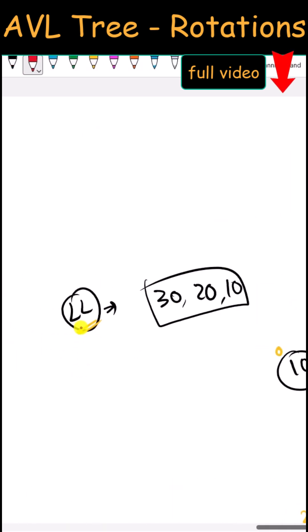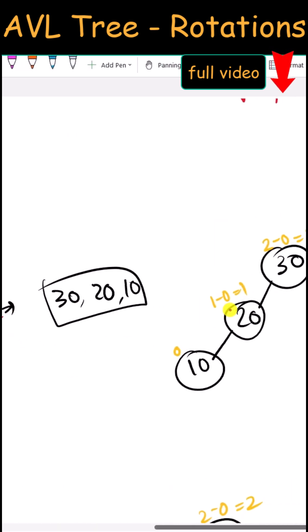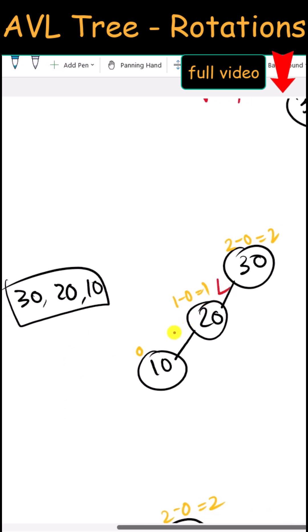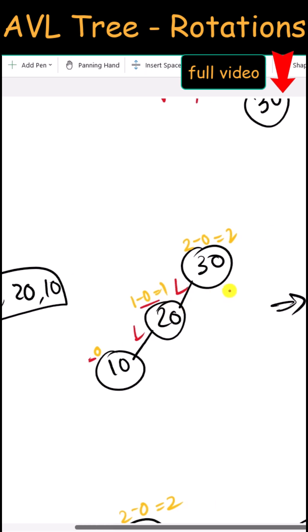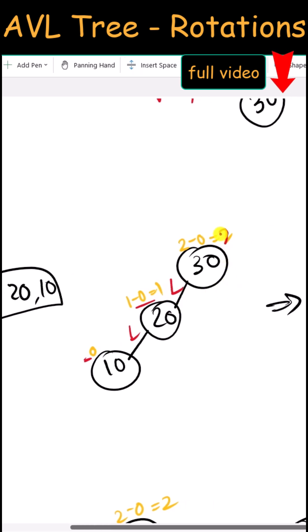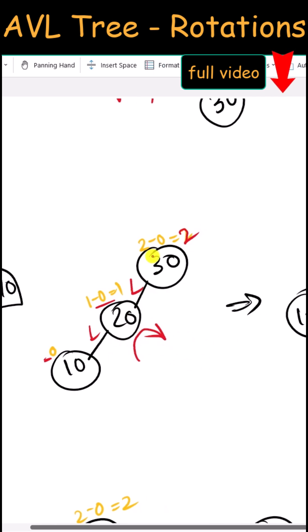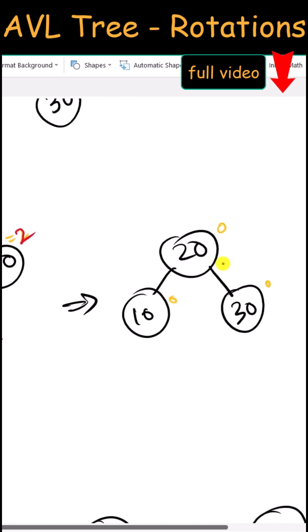Next we have the left-left rotation. This is an example of the left-left rotation because this node is balanced, this is also balanced, but this node has a balance factor of 2. To balance this we have to perform a clockwise rotation. After the rotation you can see our tree is balanced.